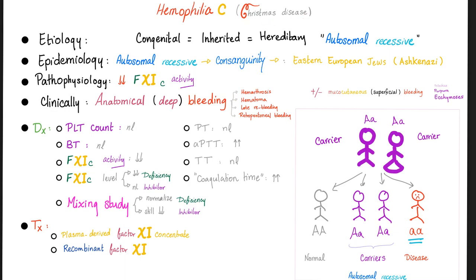Hemophilia C — also called Rosenthal syndrome — etiology: congenital, inherited, autosomal recessive. Epidemiology: autosomal recessive, therefore consanguinity, therefore associated with the Ashkenazi Jewish population. Pathophysiology: problem with factor 11. Clinically: anatomical or deep bleeding. Diagnosis: similar to hemophilia A and B, but involving factor 11 instead of factor 8 or 9. Treatment: give factor 11; if there is an inhibitor, give factor 11a (active form).